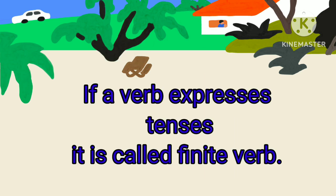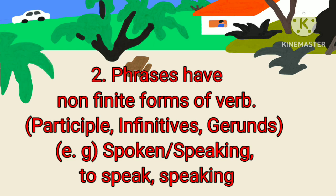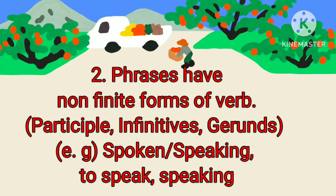If the verb expresses 12 tenses, that verb is called a finite verb. But phrases do not have finite verbs. Phrases have non-finite forms of verbs. Participle, infinitives, and gerunds are non-finite forms of verbs. 'Spoken' is past participle, 'speaking' is present participle, 'to speak' is infinitive, and 'speaking' is gerund. These are non-finite forms of verbs.